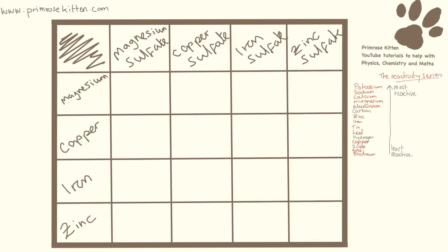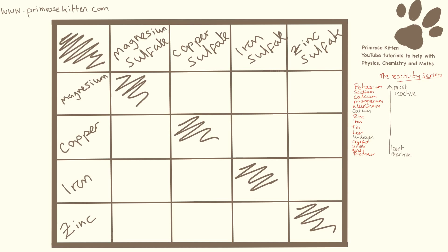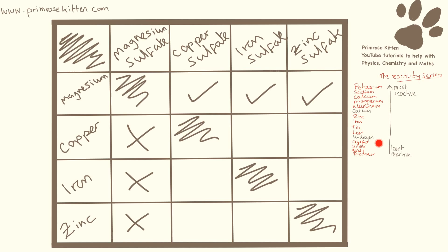Here we have our results table. When we mix a metal with its own sulphate, nothing is going to happen, so I'm just going to cross those out. Magnesium is much more reactive than anything else, so it's going to want to keep the sulphate for itself — we're not going to get any reactions with magnesium sulphate and anything. If we look at copper and iron sulphate, copper is below iron, so you wouldn't expect a reaction. And copper with zinc sulphate — zinc is more reactive and will keep the sulphate, so no reaction there either.